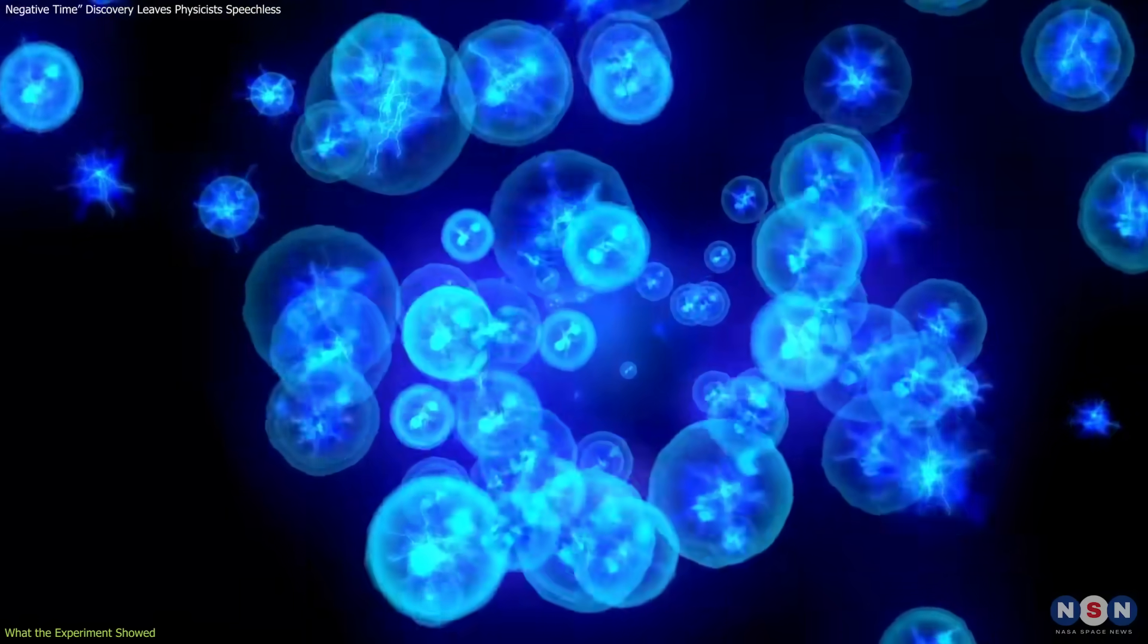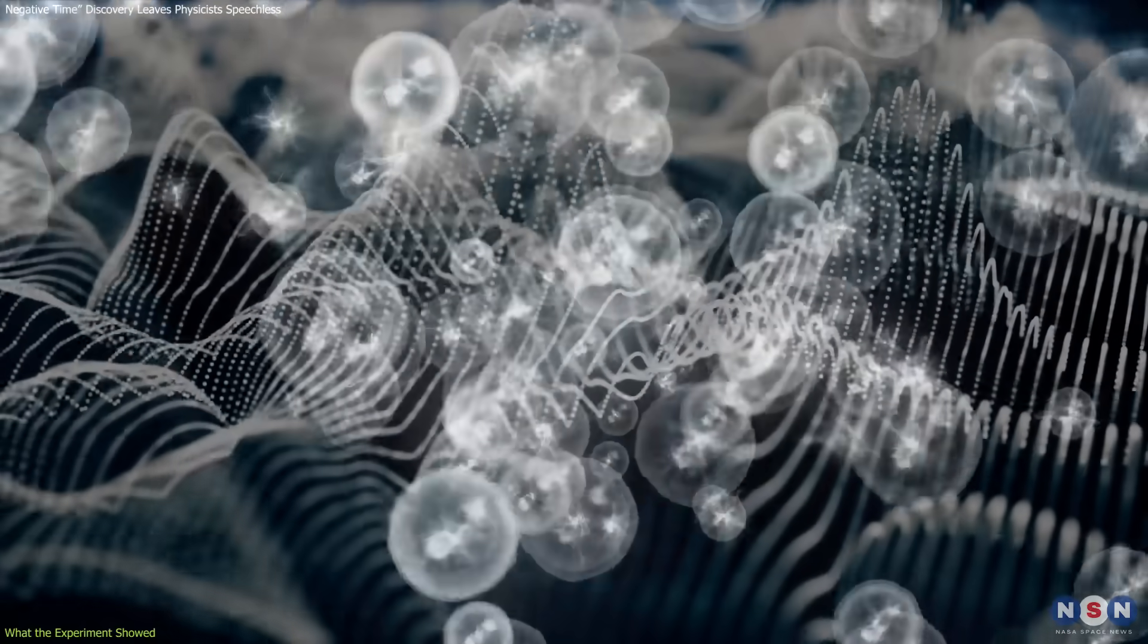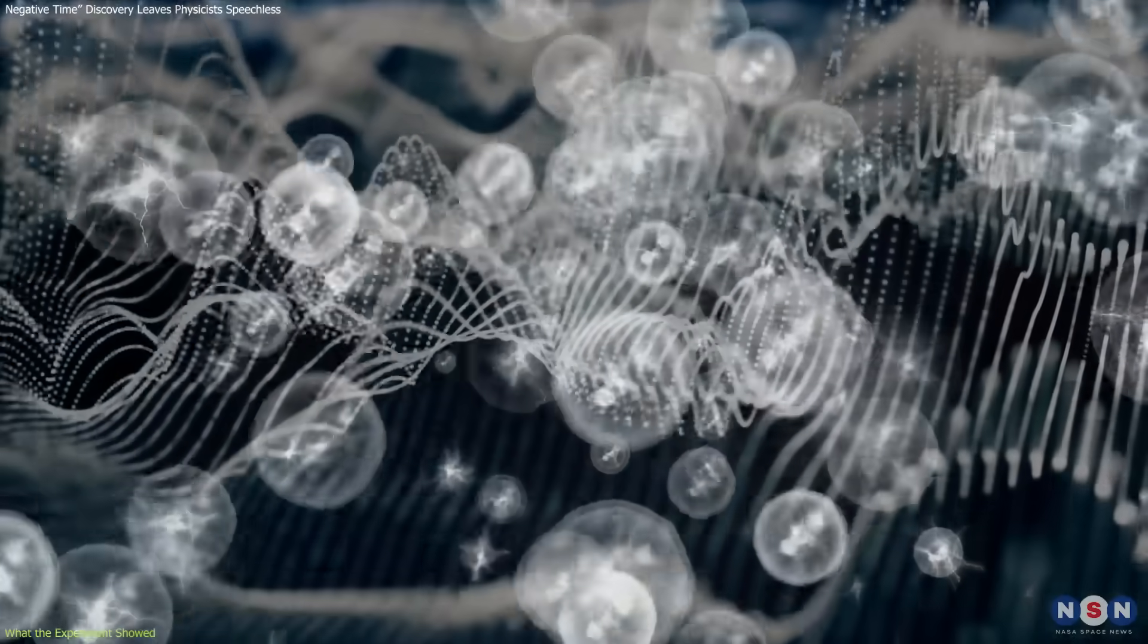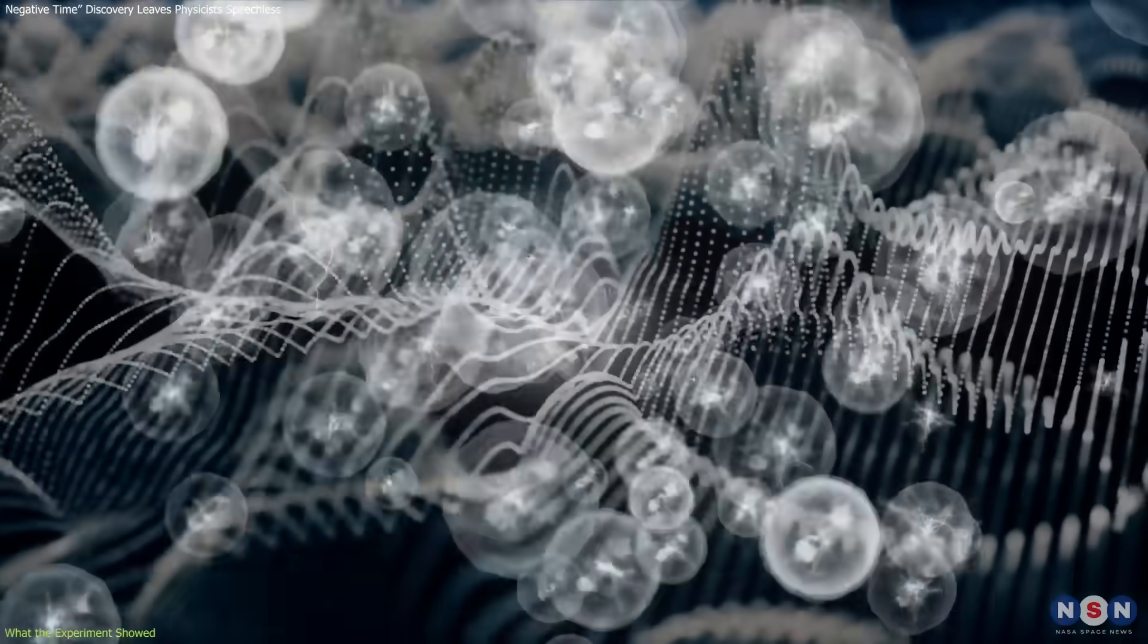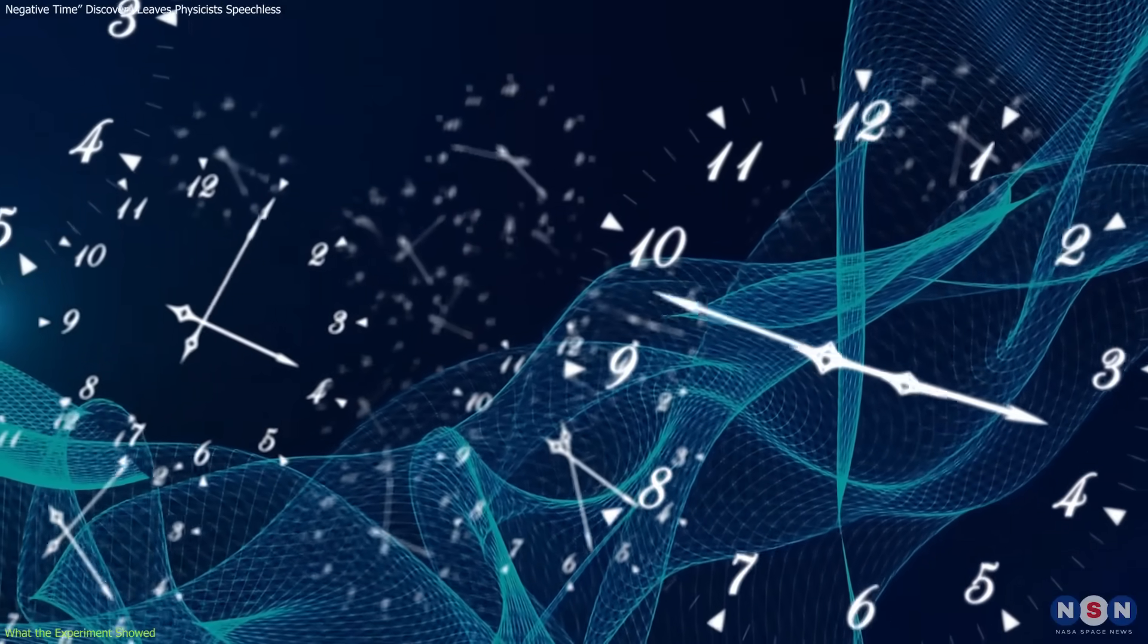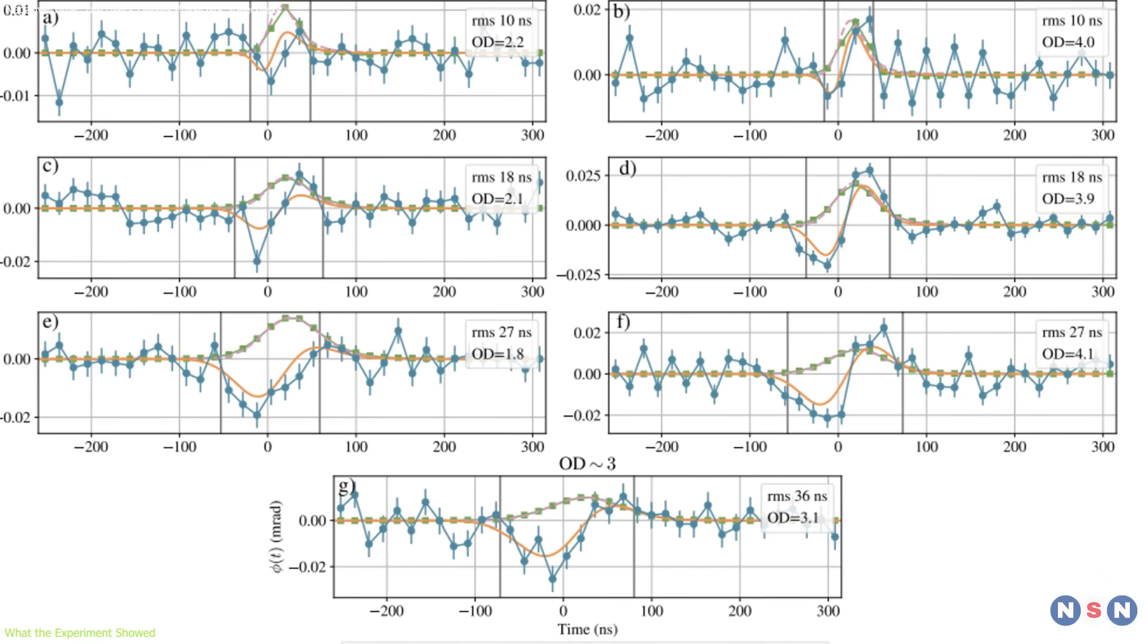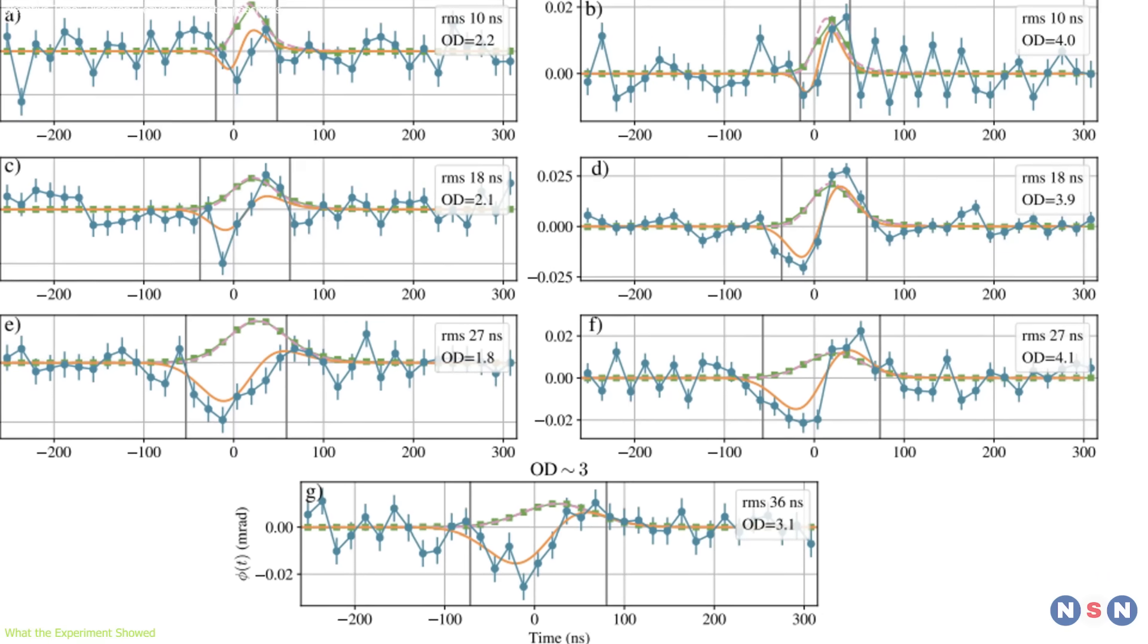Photons behave not as point particles, but as probability waves. When these waves interact with atoms, especially under asymmetric pulse conditions, the group delay—the average time defined by the wave's envelope—can shift in ways that defy classical expectations. This includes producing a result that, mathematically, appears to be less than zero.